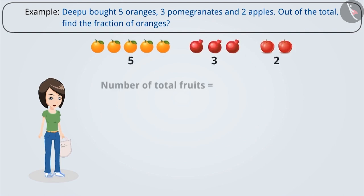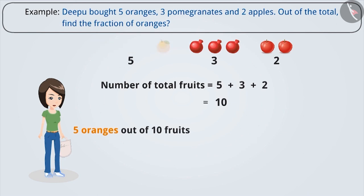Here, the total number of fruits are 5 plus 3 plus 2, that is 10. Of these 10 fruits, 5 are oranges. Therefore, the denominator is 10 and the numerator is 5. By doing so, the fraction we get is 5 by 10.